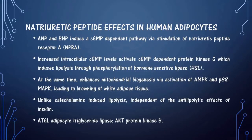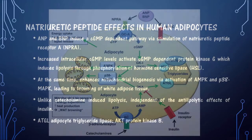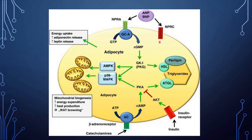One example is natriuretic peptide — ANP and BNP — as examples for the cyclic GMP-dependent pathway. ANP and BNP bind to guanylyl cyclase, which converts GTP to cyclic GMP. The cGMP activates PKG, which triggers biochemical reactions including effects on triglyceride synthesis via hormone-sensitive lipase, AMP kinase, and P38 MAP kinase.